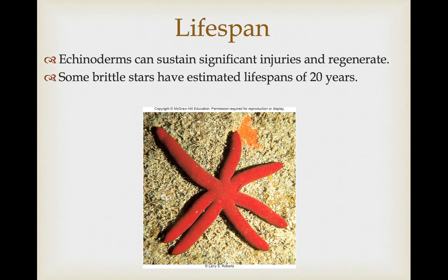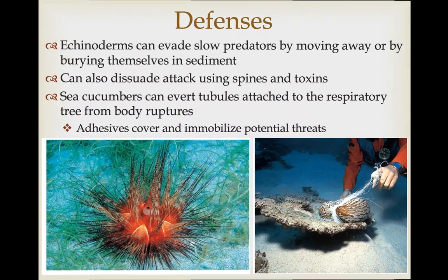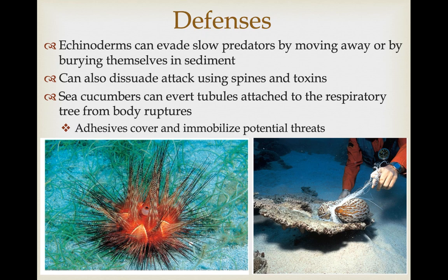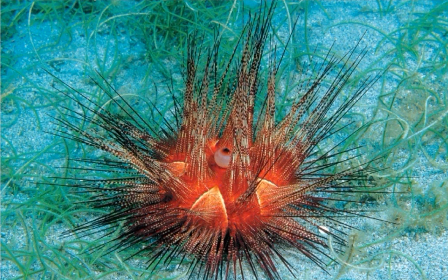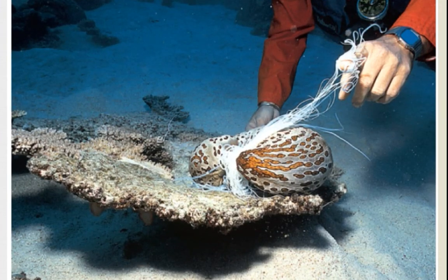Because echinoderms can sustain significant injuries and regenerate body parts, they have the potential to live a long time — some brittle stars have been estimated to have lifespans of 20 years. Brittle stars can jettison arms to escape predators. In general, echinoderms can evade slow predators by crawling away or burrowing. They also have more active defenses: spines can dissuade predators, and some spines are hollow with toxins — for example, the fire urchin can inflict a painful transfer of toxins. Sea cucumbers can evert their respiratory tree, which produces adhesive tubules that can cover and immobilize potential threats.